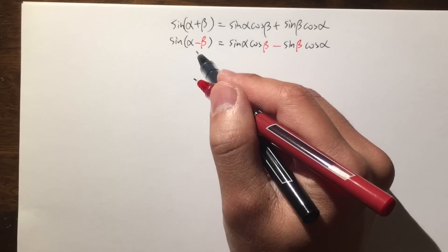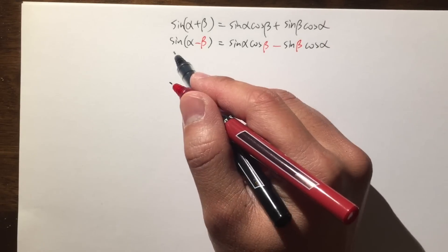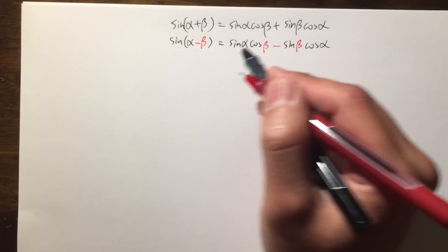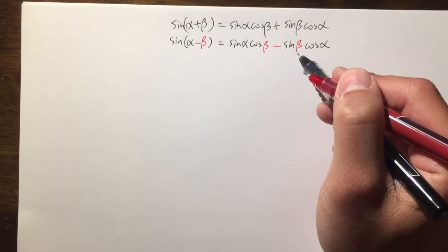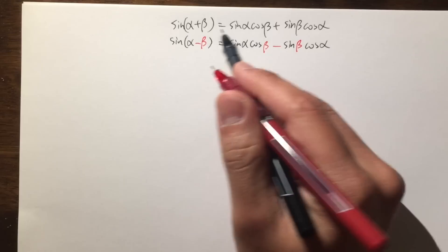In the meantime, the difference identity for sine is sine alpha minus beta is equal to sine alpha times cosine beta minus sine beta times cosine alpha.